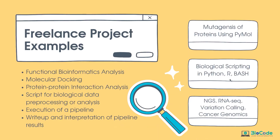For example, we will deal with three case studies: metagenomics of proteins using biological scripting in Python, R, and Bash; NGS RNA sequencing variant calling; and cancer genomics. We won't actually perform these — we'll go through them so you can understand what real-life projects look like. All of these are real-life projects that Biocorp has done for various clients all over the world.